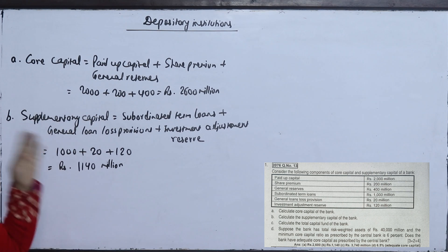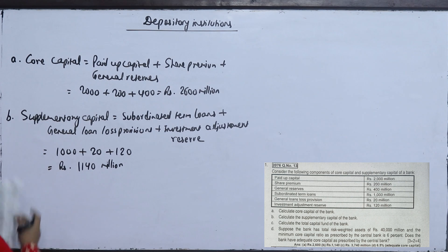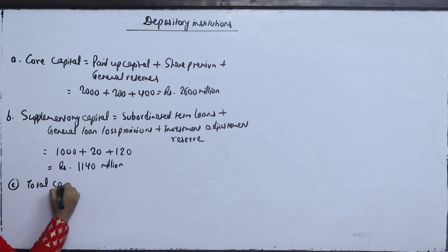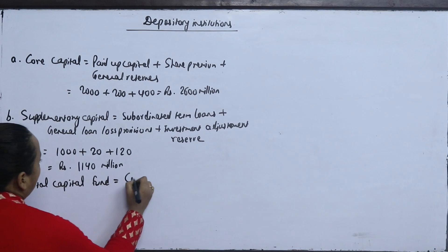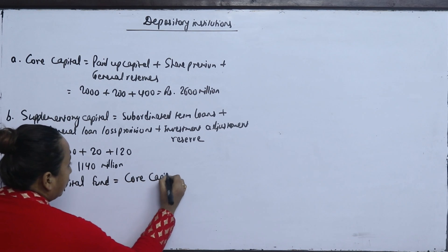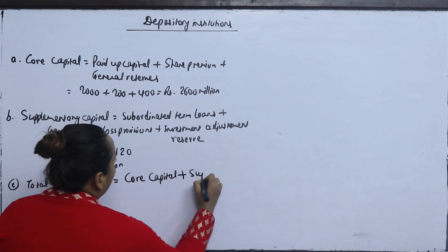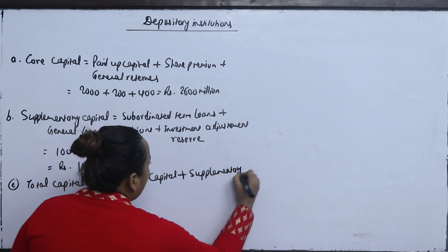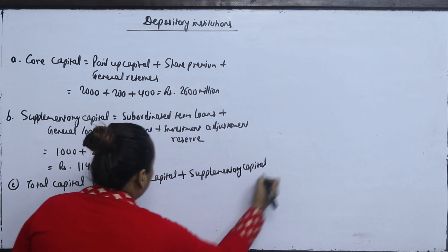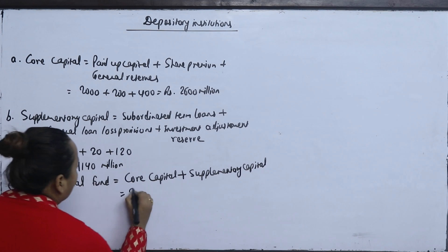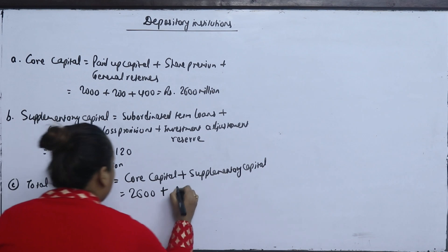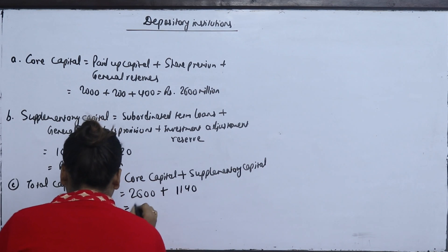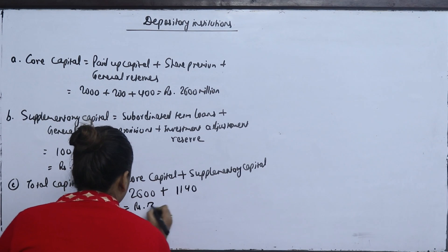The third requirement is to calculate total capital. Total capital equals core capital plus supplementary capital. Core capital is 2600 million and supplementary capital is 1140 million, giving total capital fund of 3740 million.